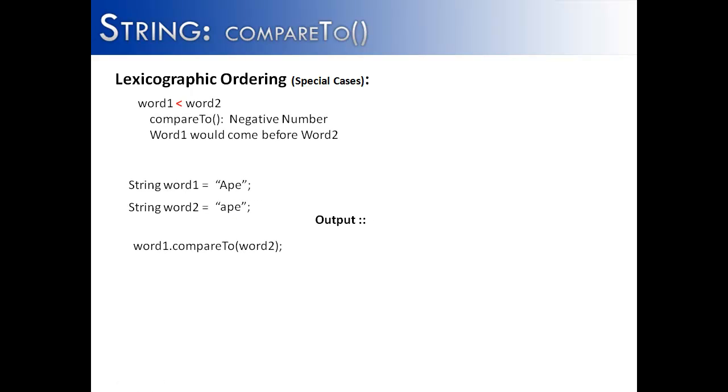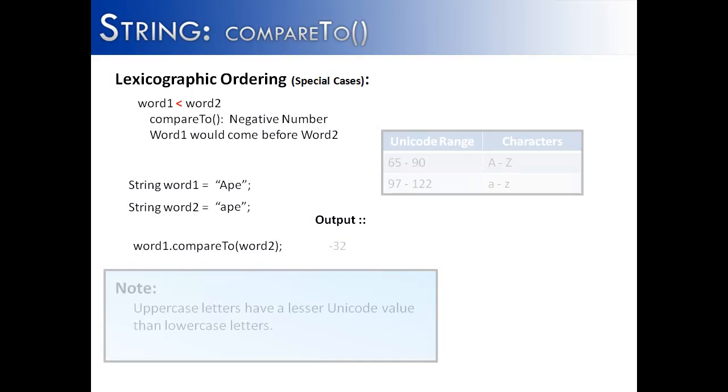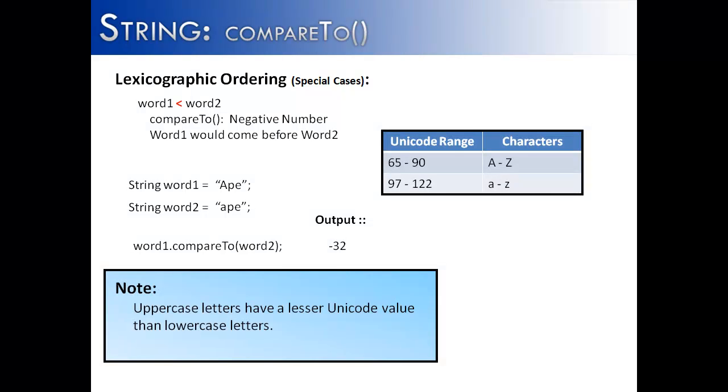The next special case is ape versus ape. Now this is different from dictionary ordering because in Unicode and in ASCII, the lowercase a is actually a higher number than the uppercase a. So therefore, we get an interesting value. We get negative 32. The capital A is less than the lowercase a. In Unicode ranges, 65 is A, 66 is B, so on and so forth.